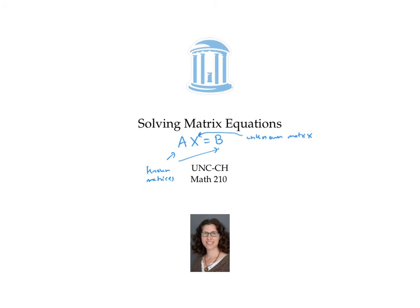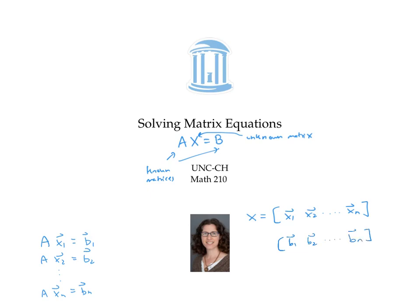In this video, we saw that solving the matrix equation A times x equals B was equivalent to solving a bunch of vector equations, where the unknown vectors x1 through xn form the columns of the unknown matrix x. But rather than solving each of these equations one by one, it was much more efficient to augment the matrix A with the matrix B and convert that to reduced row echelon form.